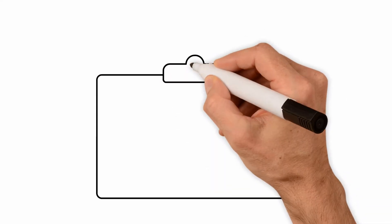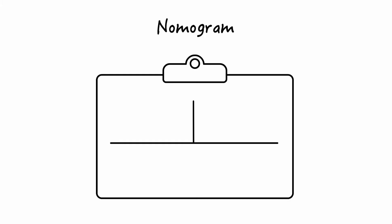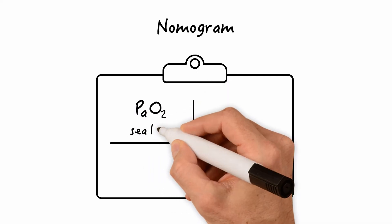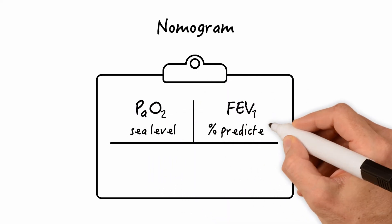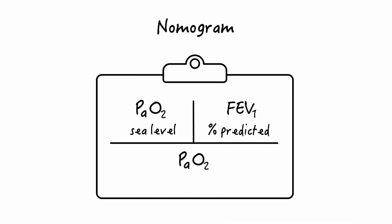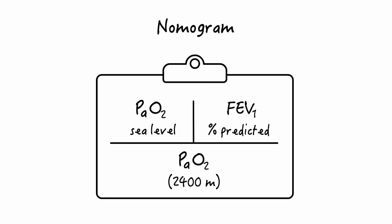The first approach uses regression equations and a nomogram to predict the resulting arterial PO2 in flight. Using the patient's arterial PO2 at sea level, along with the FEV1 percent predicted, arterial PO2 at an altitude equivalent to 2400 meters can be estimated and, if necessary, supplemental oxygen can be prescribed.